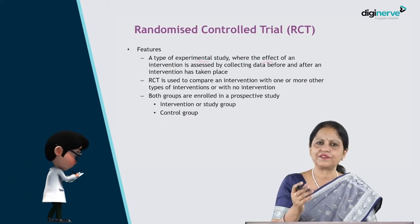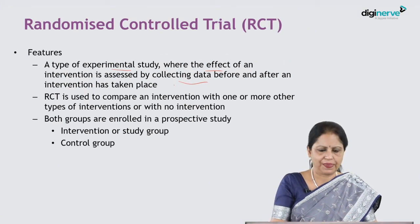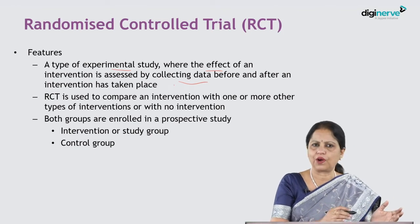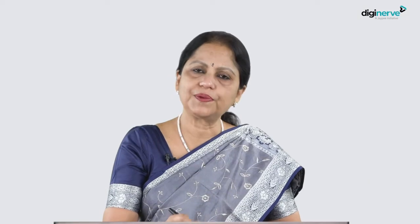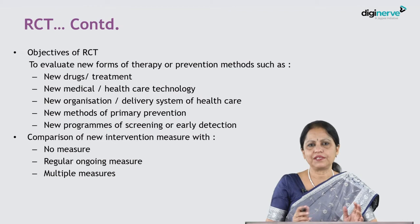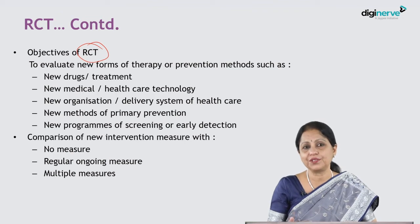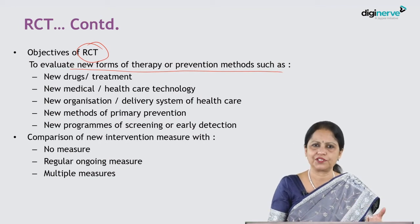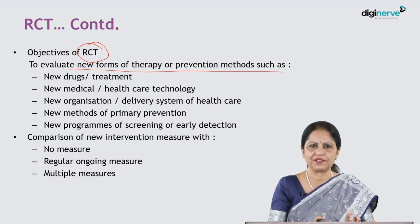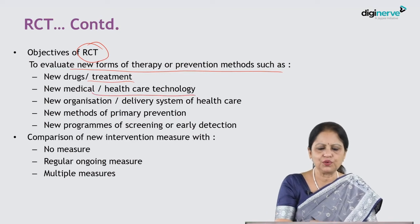A randomized controlled trial (RCT) is an experimental study where the effect of an intervention is assessed by collecting data before and after the intervention. We can compare one intervention against another, no intervention, or multiple interventions, using an interventional study group and a control group. The objectives of RCT are to evaluate new forms of therapy or prevention — such as a new drug or new treatment modality.